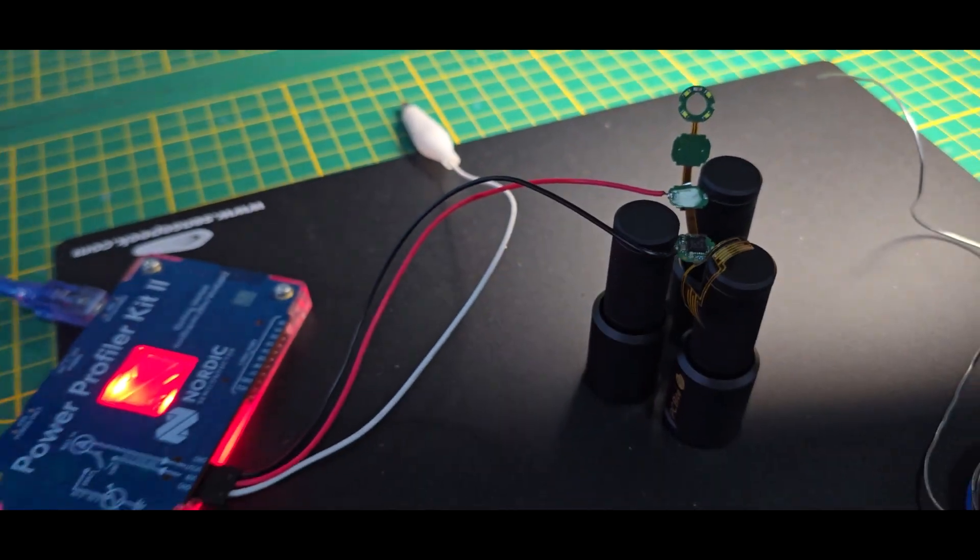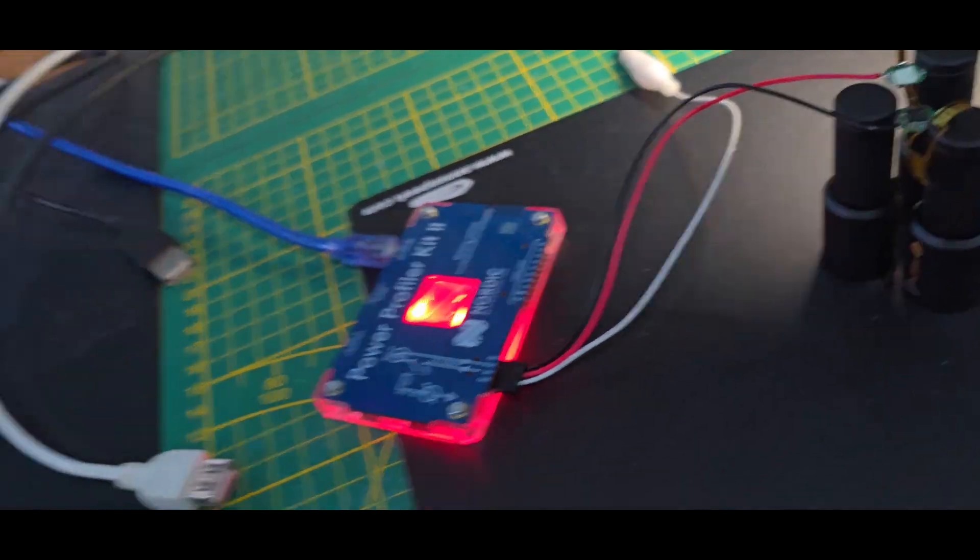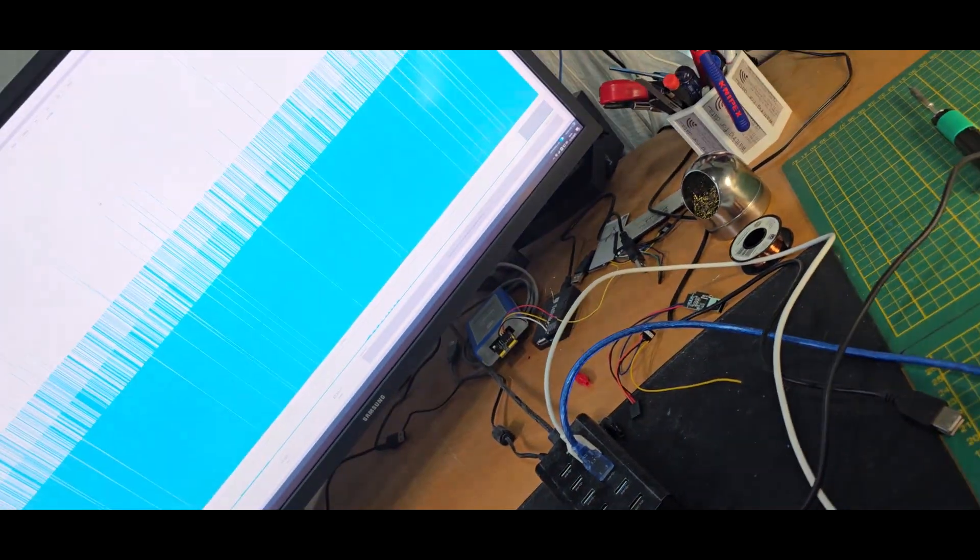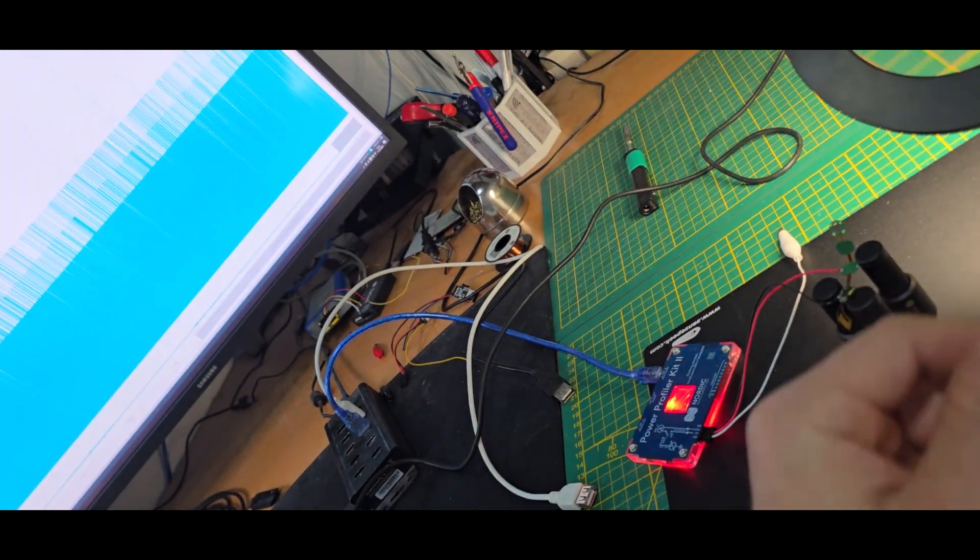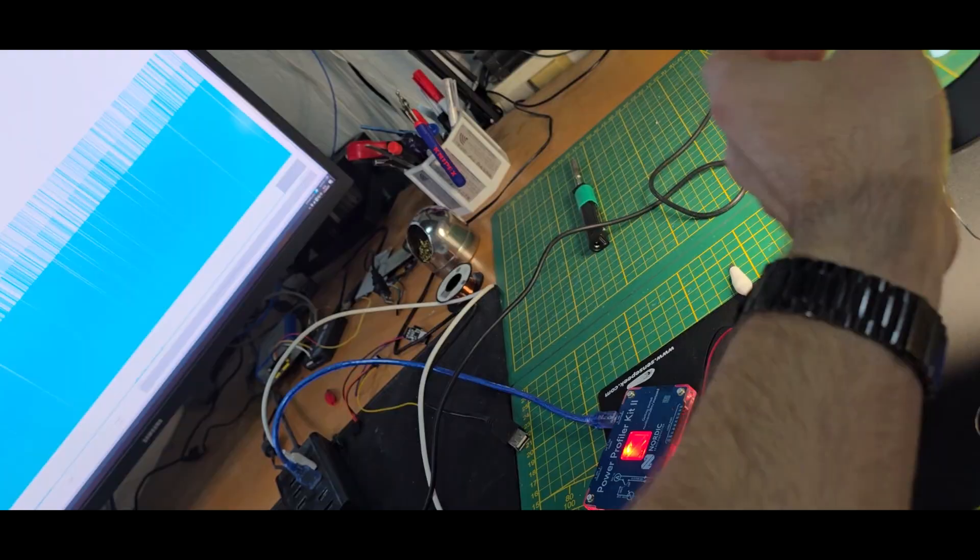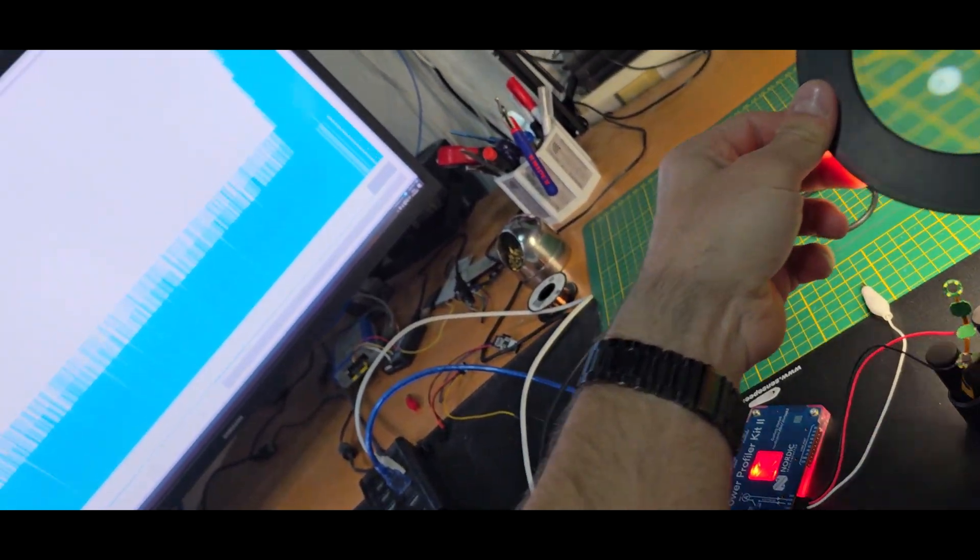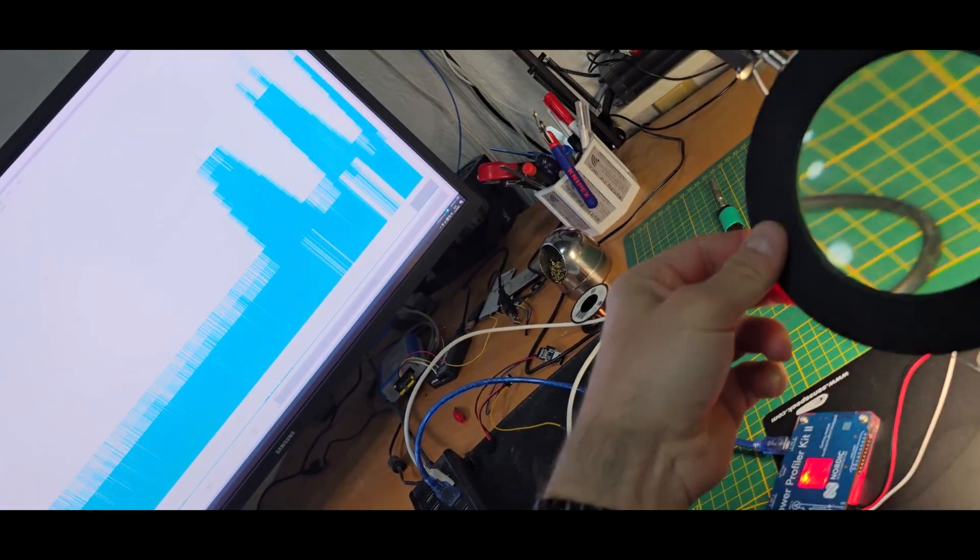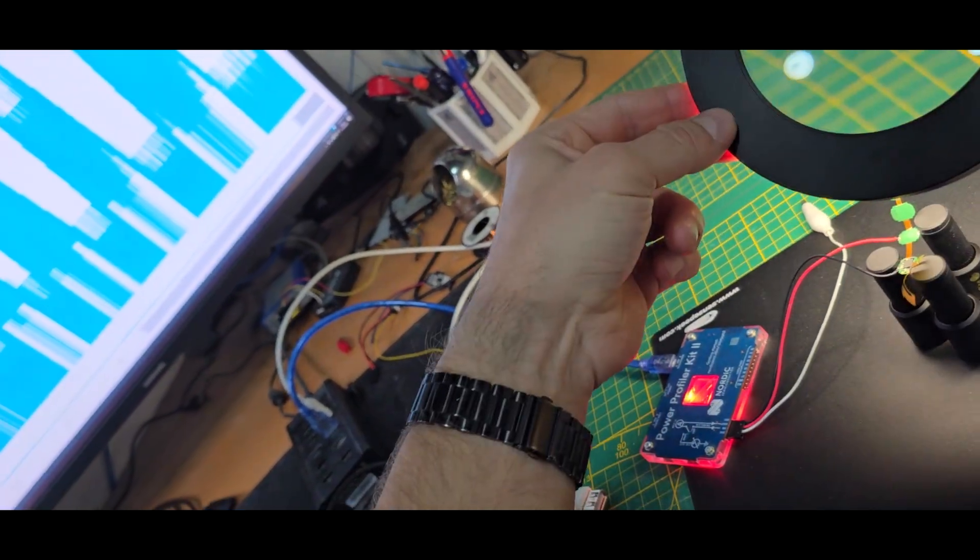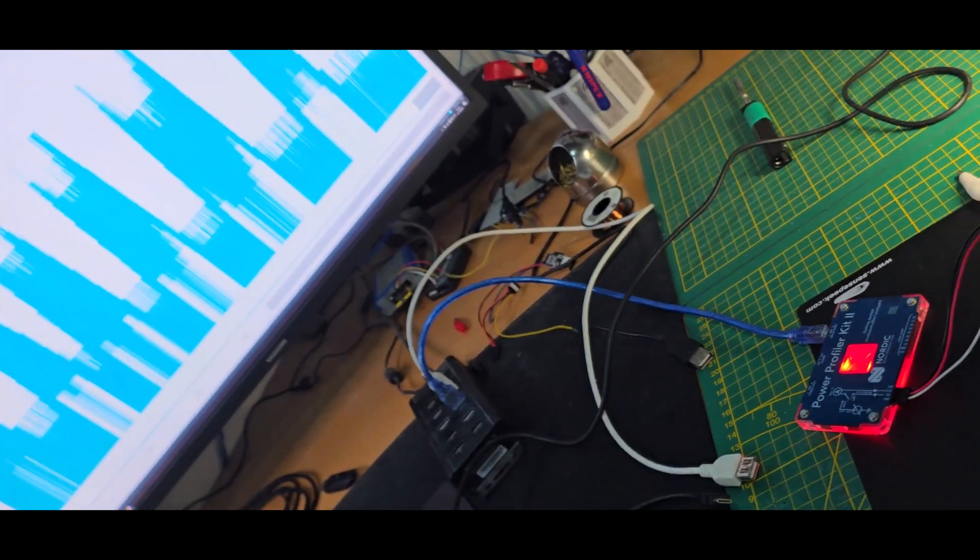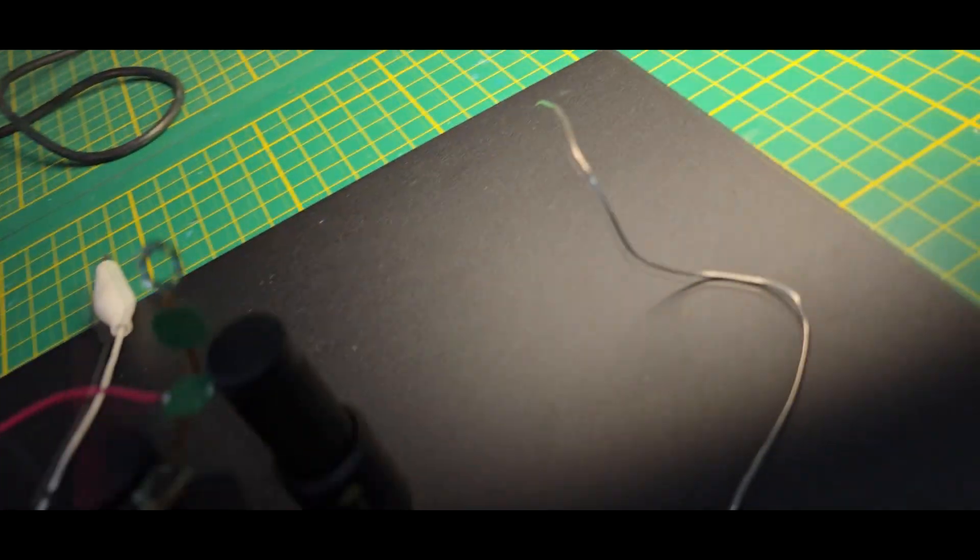Short info. So after connecting power to it with the PPK, so we can see the current draw from it, it's still in some kind of sleep mode. But the moment some light is shining onto this sensor, we can see the current draw goes up a bit.